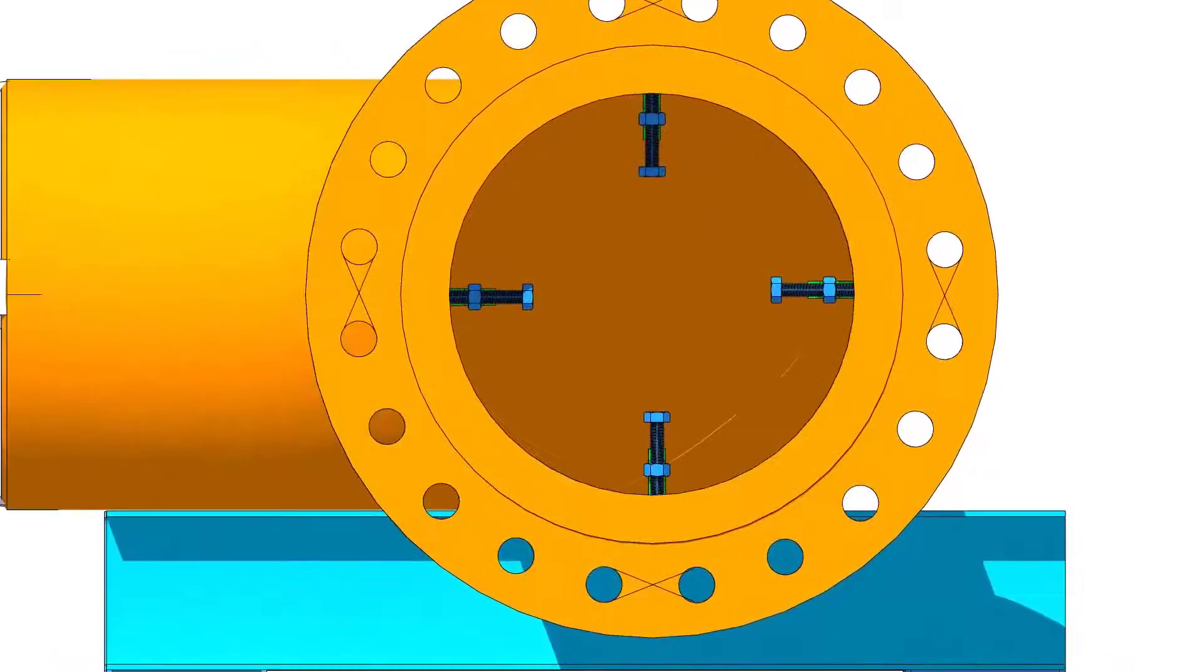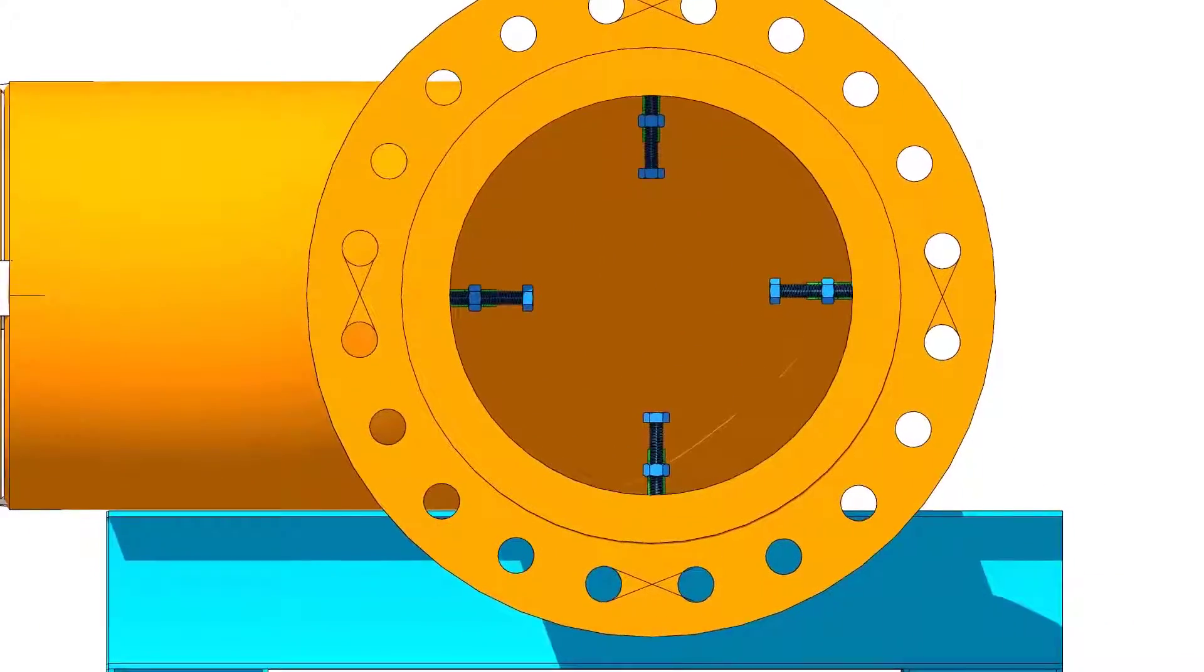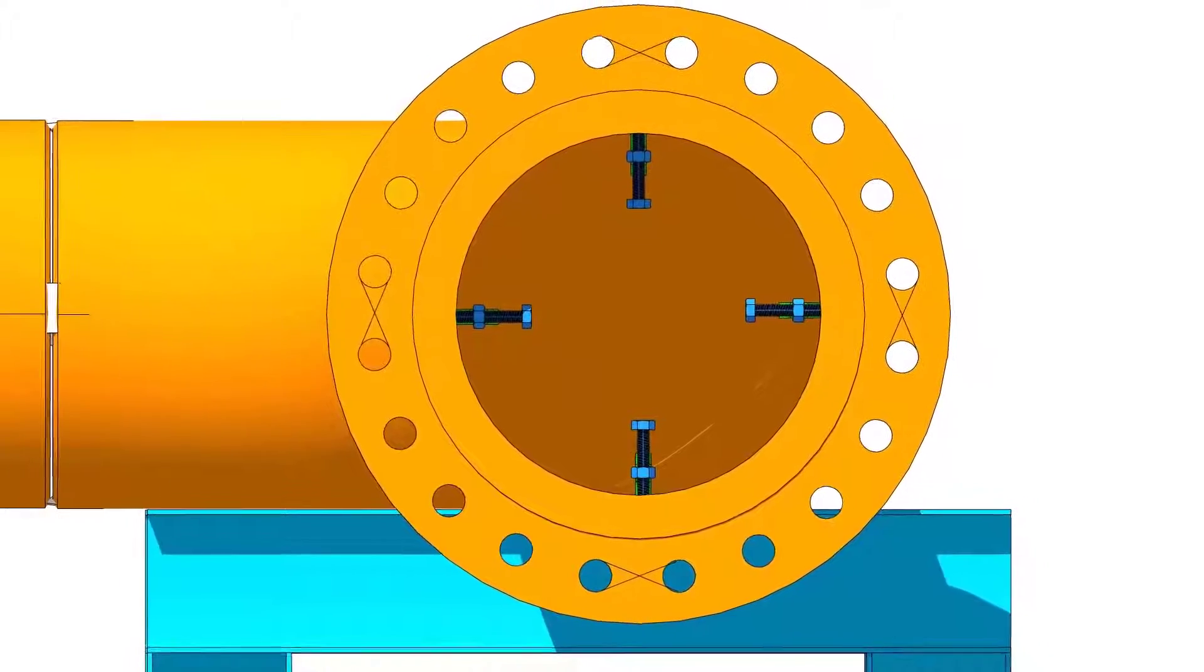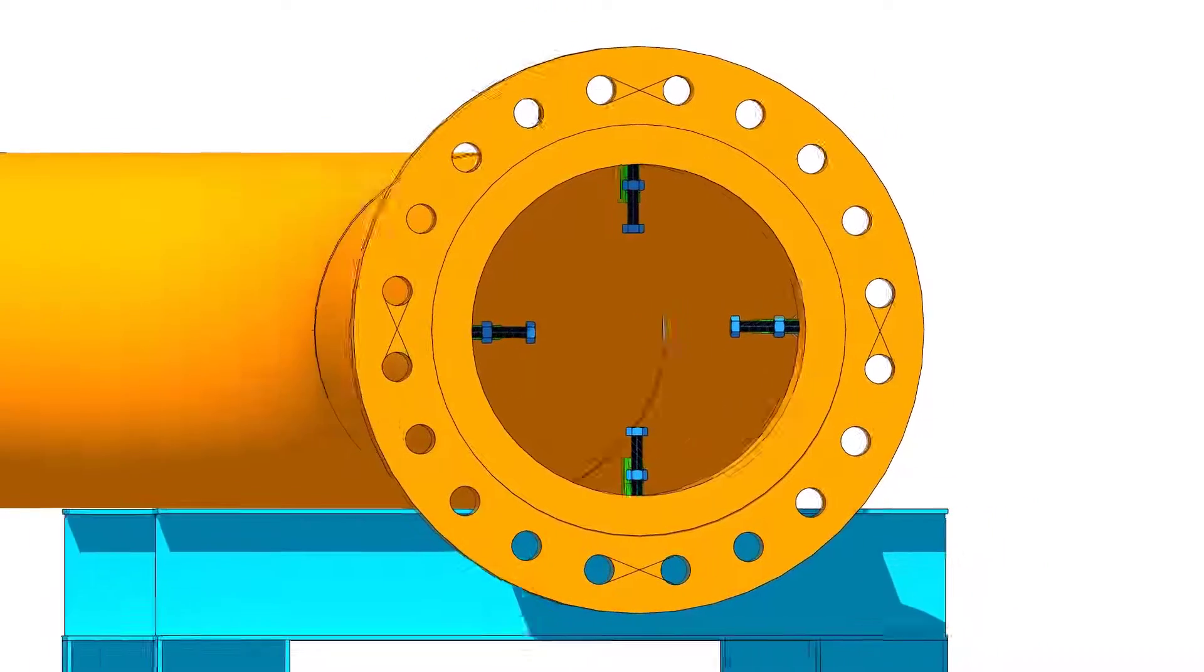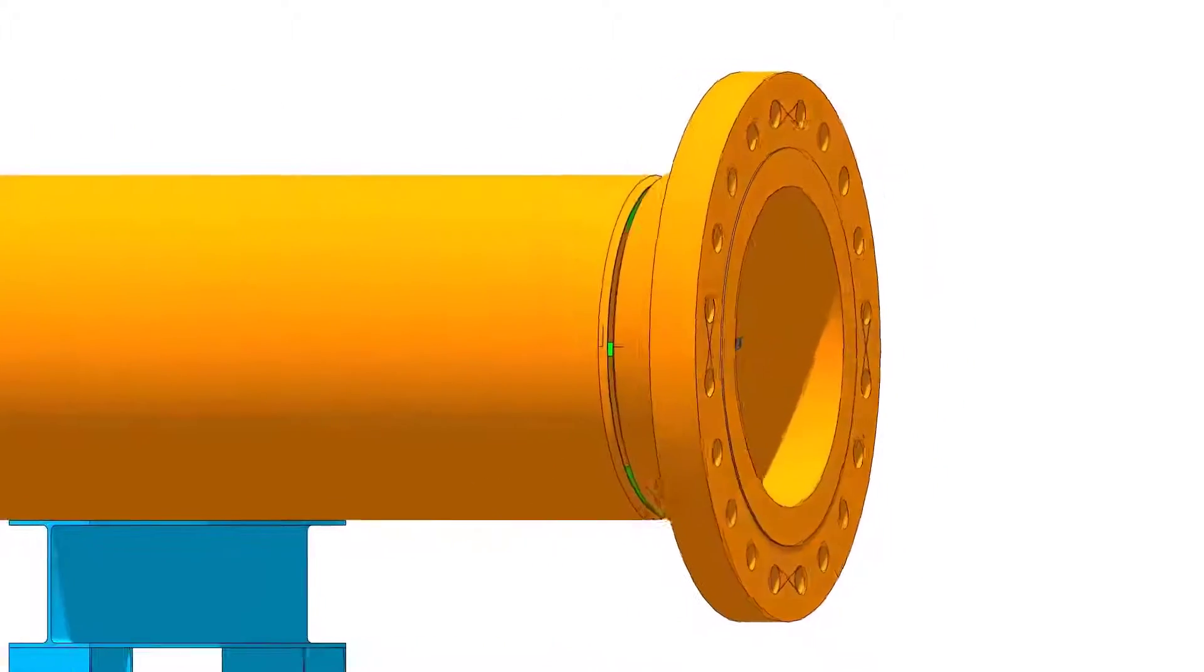Put the flange on the pipe. Put the gap rod between the pipe and the flange.